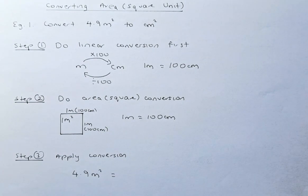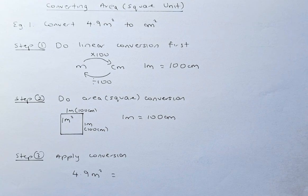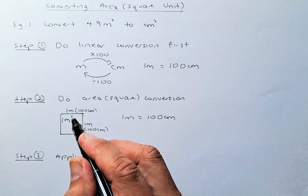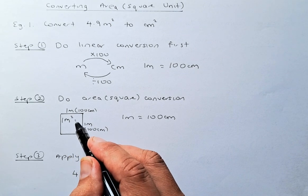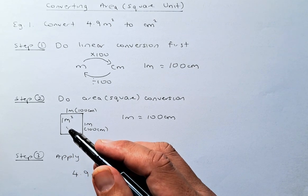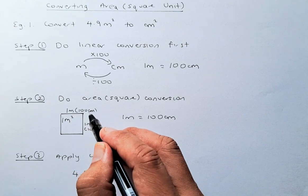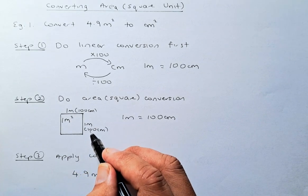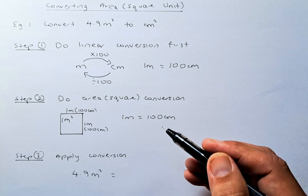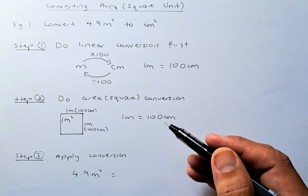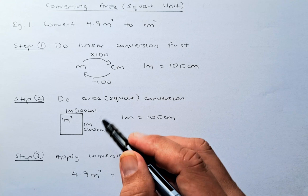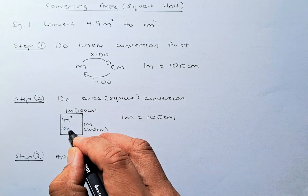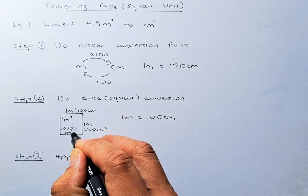The next step, we are going to do an area conversion or a square conversion. In a square, if you have 1 meter squared, so 1 meter by 1 meter will give you 1 meter squared. If we are to convert to centimeter, we convert 1 meter to 100 centimeter, and likewise the other side, 1 meter to 100 centimeter. So to convert to centimeter squared, you multiply 100 by 100 and you get 10,000 centimeter squared.